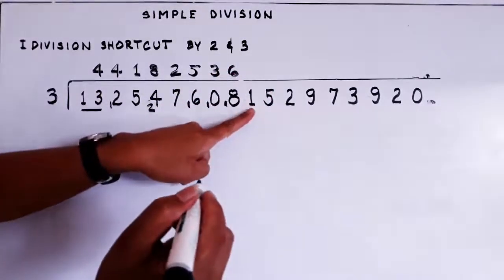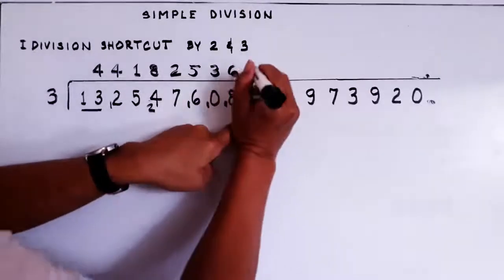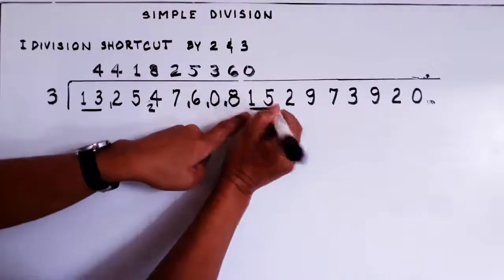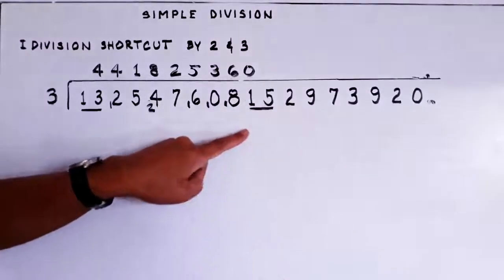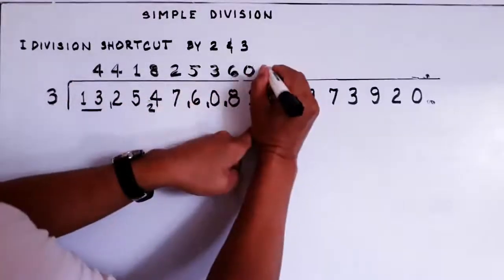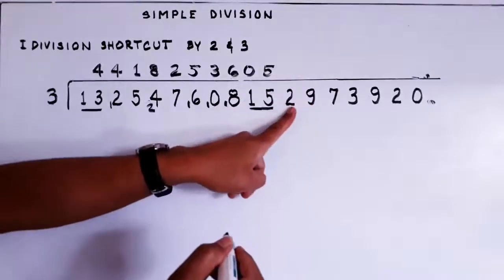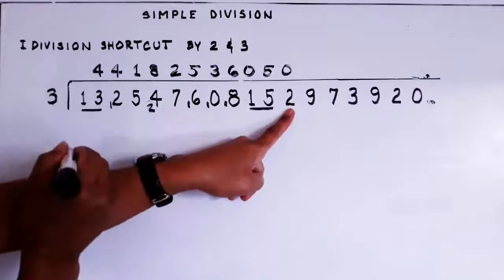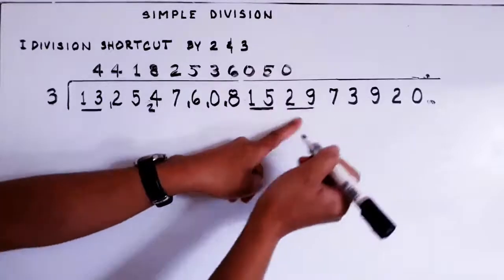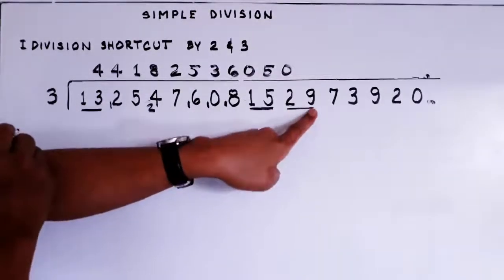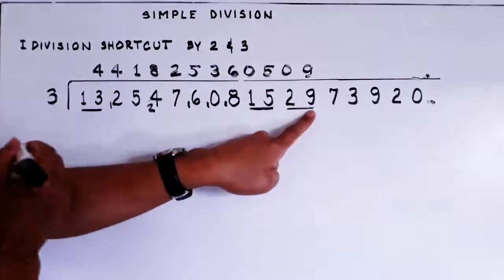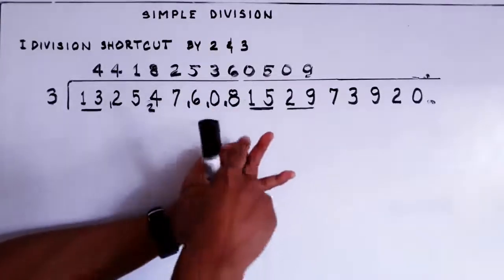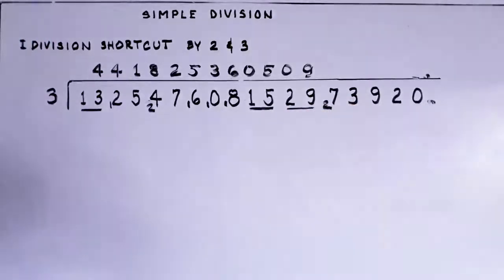Now 1 alone — not 11 or 21, just 1. One divided by 3 is zero — don't forget to put zero. Then put the 1 next to the 5, making it 15. Divide 15 by 3 — exactly 5. Proceed to 2 divided by 3 — cannot get 3 from 2, so zero. The 2 carries to the 9, making it 29. Divide 29 by 3 — maximum is 9, because 9 times 3 is 27. Count from 27 to 29: 27, 28, 29 — remainder is 2. Put the 2 next to the 7, so 7 becomes 27. Divide 27 by 3 — exactly 9.